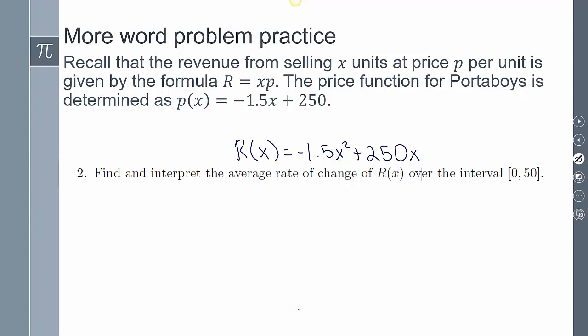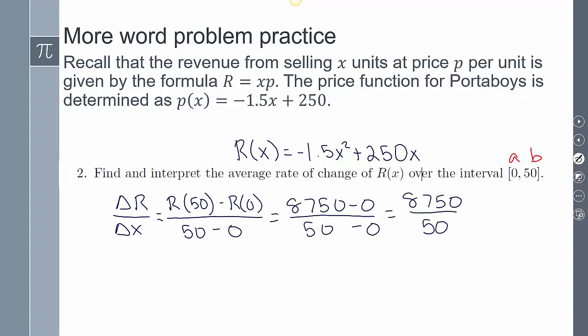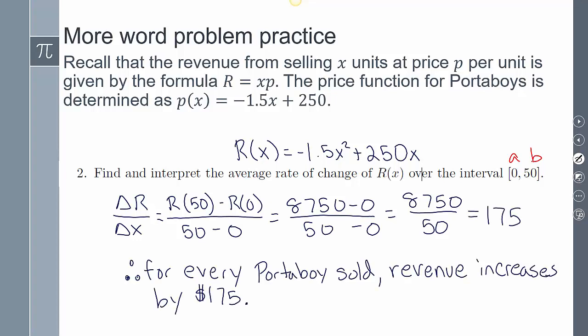Number 2 says find and interpret the average rate of change of r(x) over the interval [0,50]. This is my a and this is my b. It's the change in r over the change in x: [r(50) - r(0)]/(50 - 0). If I simplify using a calculator, I'm going to get 150. For every Portaboy sold, revenue increases by $150.